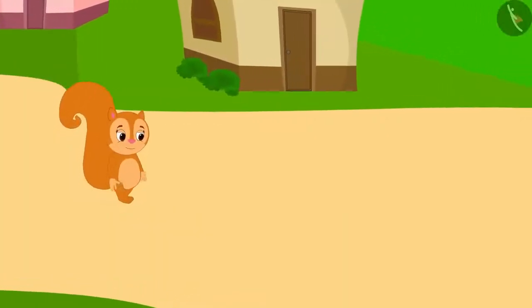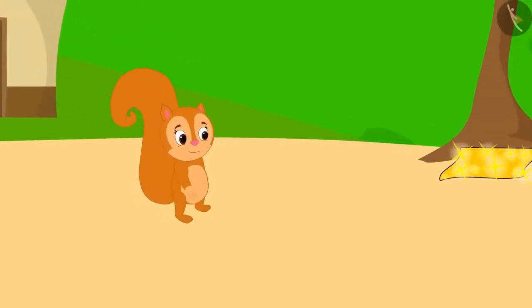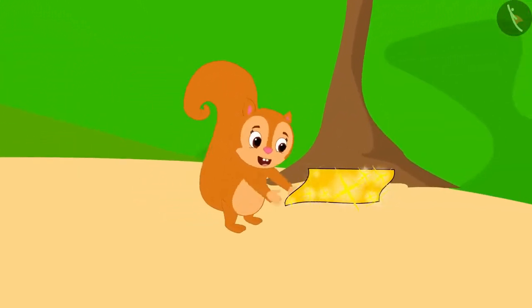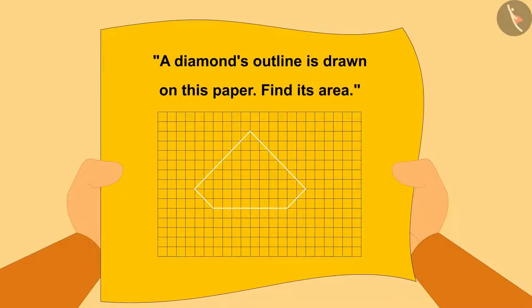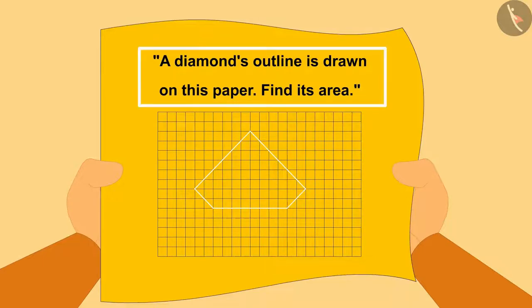Chanda was returning home from her shop. Just then, she saw a shiny paper under a tree. A diamond's outline is drawn on this paper. Find its area. Chanda read the instructions written on the paper.